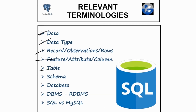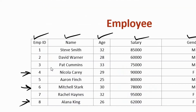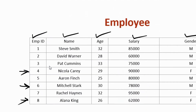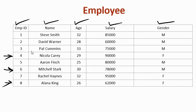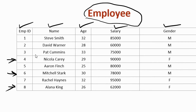Let's quickly discuss table. This entire information that you can see on the screen — including all the data from all the records and all the columns — is called a table. For instance, we have this demo of the employee table over here.